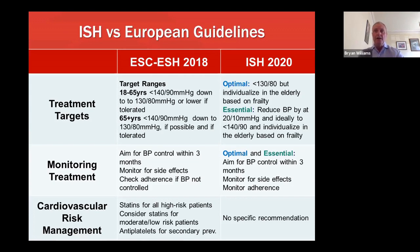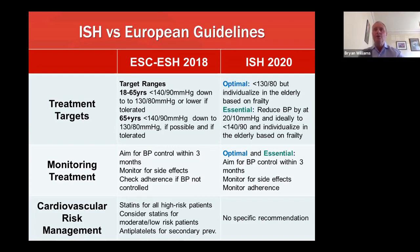The European guideline places great emphasis on recommendations around concomitant drug treatment for risk management, notably the delivery of statins to all patients at high or very high risk, and consideration of statins even for patients at low to moderate risk with hypertension, and the use of antiplatelet therapy — usually low-dose aspirin — for secondary prevention. The international guideline doesn't contain a specific recommendation on concomitant cardiovascular disease risk management, but would surely endorse the recommendations of many other guidelines in this area.